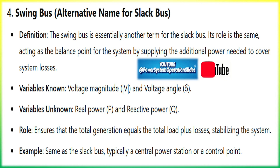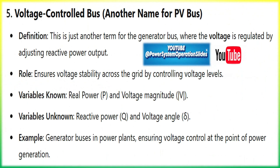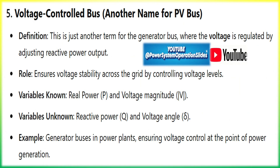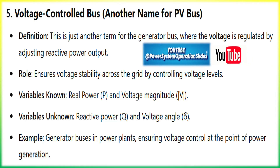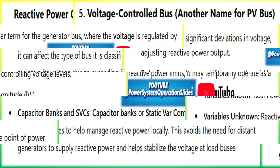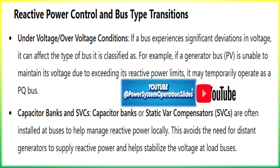Generator bus — PV bus or voltage-controlled bus. A generator bus is one where real power P and voltage magnitude V are specified. The system controls the reactive power generation to maintain a constant voltage at this bus. Variables known: real power P and voltage magnitude V. Variables unknown: reactive power Q and voltage angle. Generator buses help control voltage levels within a power system and are responsible for maintaining voltage by adjusting the reactive power output. Example: a bus where a power plant is connected, maintaining the voltage to ensure system stability.